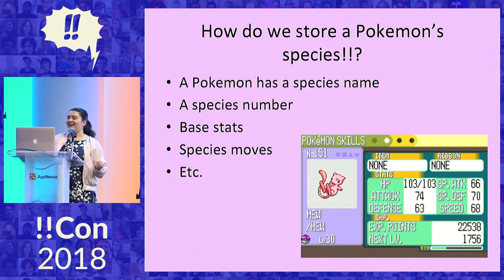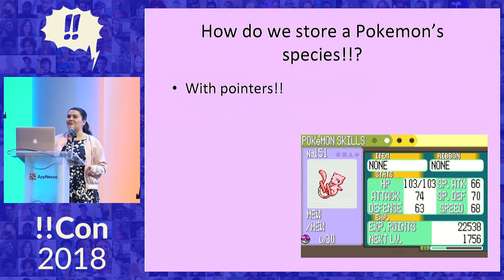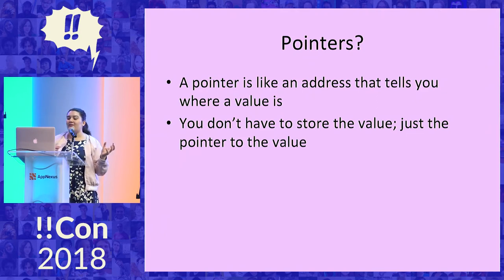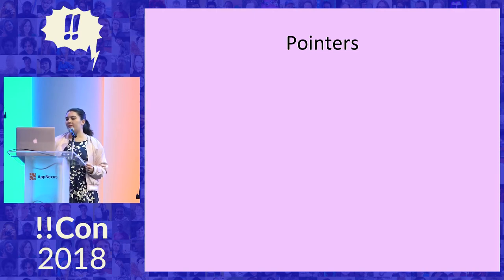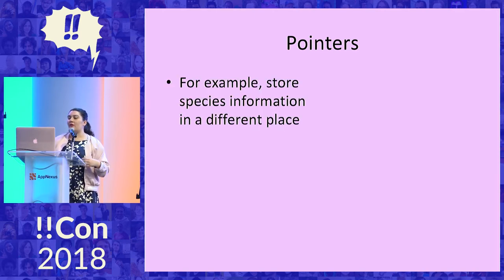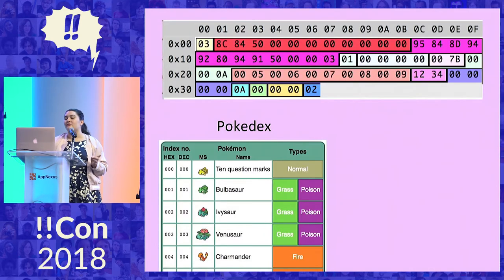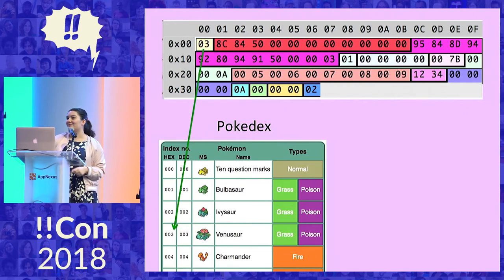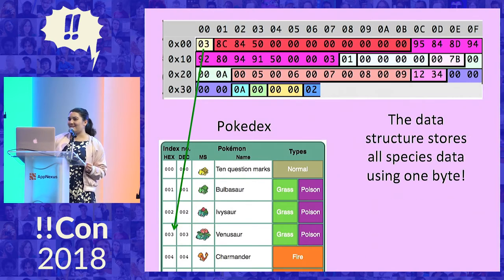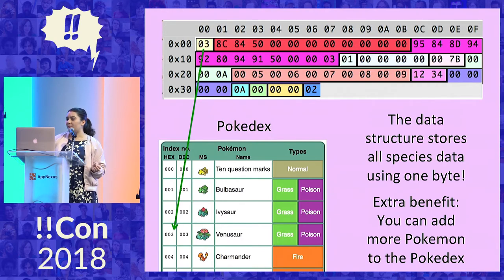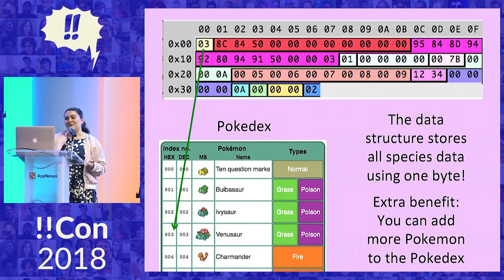So how do we do this? Well, we can just use pointers. A pointer is a value that is an address to a different location that stores the information you need. For example, you can store all the species information in a different place and have pointers pointing to it in the Pokemon data structure — that's kind of like a Pokedex. The species information is stored in one byte, and it just points to the Pokedex entry, so Venusaur. The extra benefit is that if you add more information to the Pokedex, you don't have to change the data structure at all, which is also great because we have 700 Pokemon and more.